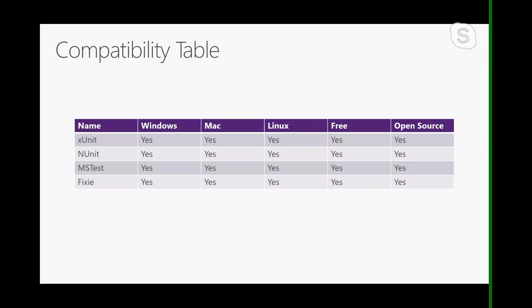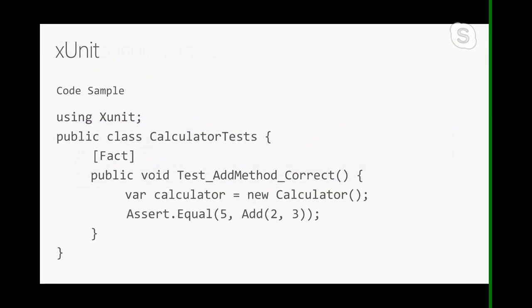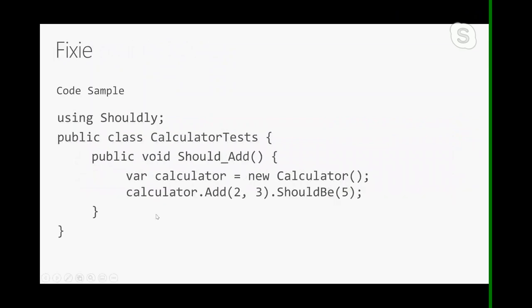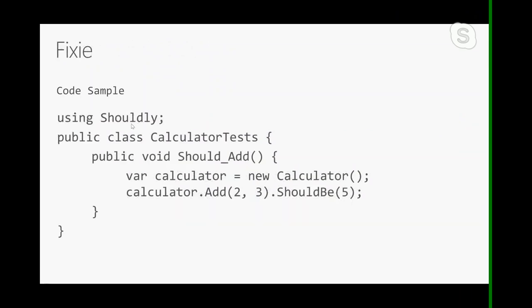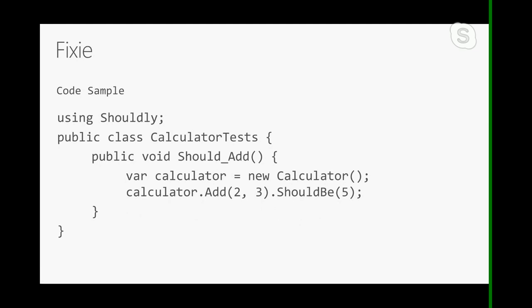Fixie might not be so popular, but it's a convention-based unit testing framework great for developers who like minimalism — it includes just the bare minimum out of the box. A typical xUnit test file is super simple: you have a test method and an assertion library out of the box. Fixie doesn't require any fancy attributes; it looks for classes that end with 'Tests' and executes the methods within them. It doesn't come with an assertion library, so here we use Shouldly.